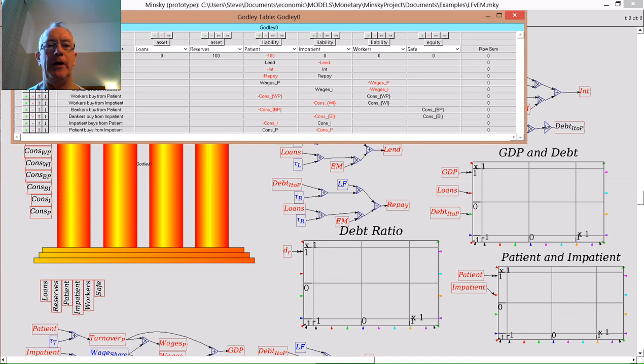Here's my simple model of loanable funds. In the accounts I have here, I have loans and reserves, which are the assets of the banking sector. Nothing has happened over here because banks are just intermediaries.